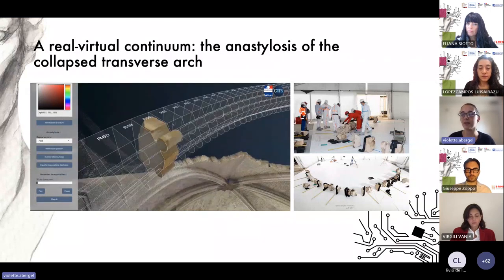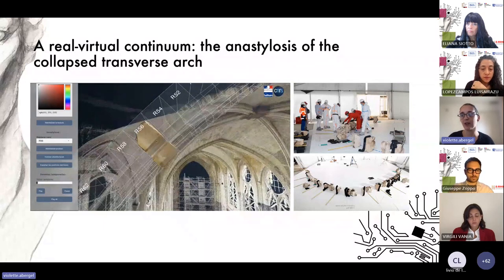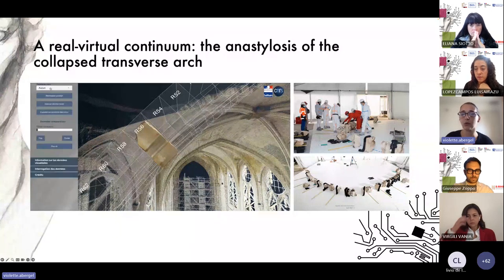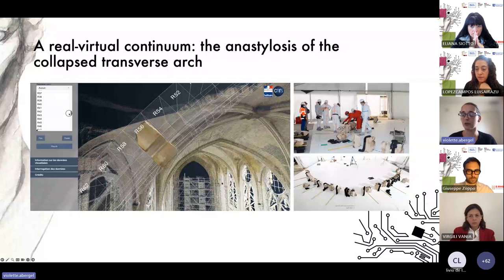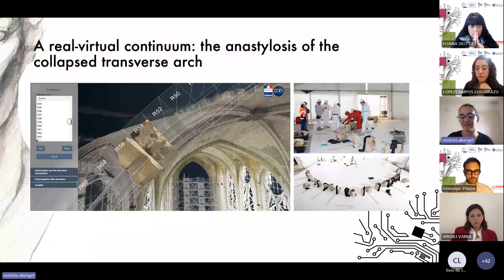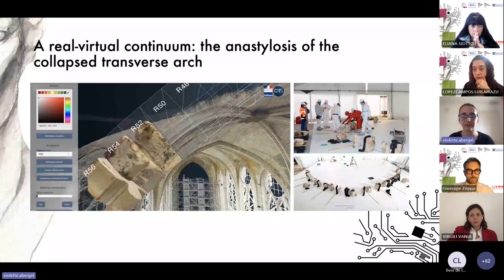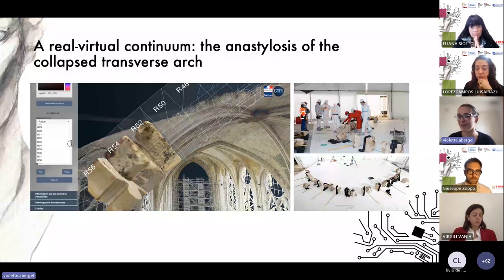For example, here is a work done with the stone working group whose goal was to realize the anastylosis of the collapsed transverse arch in the nave. Initially, as you can see on the right, they worked directly on the worksite by physically moving the stones to test various configurations. But it was tedious because of the weight of the stones, their lead contamination, and their different storage locations — and also not really sustainable.